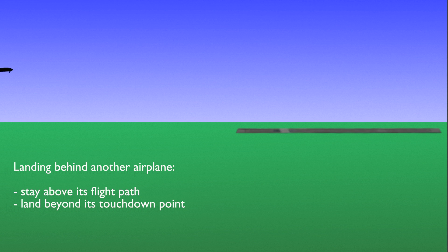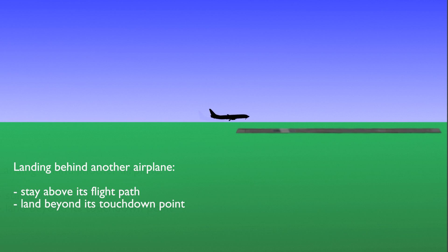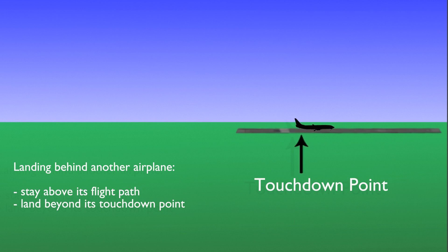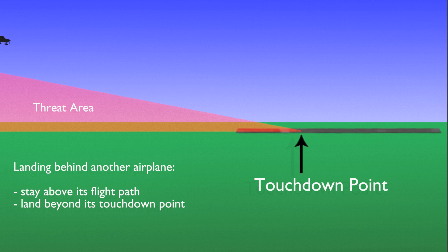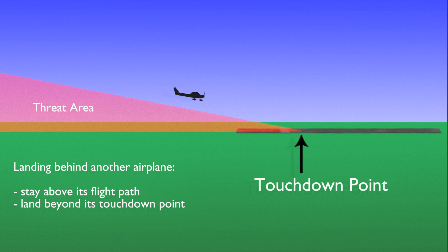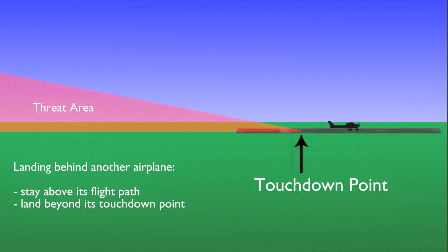If you are landing behind a larger airplane, staying above the airplane's flight path all the way to landing would mean landing at or beyond its touchdown point. A common mistake is to stay above the other plane's path until the last few hundred feet and then forget all about the wake turbulence to concentrate on the landing. However, the other airplane produces turbulence all the way to touchdown. Make sure to land beyond the touchdown point or go around if you're not comfortable with the situation.